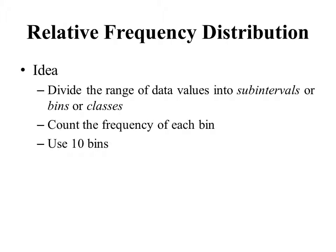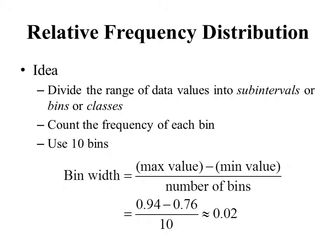For this example we're going to use 10 bins — there's nothing magical about that number, it's just a nice choice. We calculate the bin width by taking the maximum data value, subtracting the minimum data value, and dividing by the number of bins. In this example, the max is 0.94, the min is 0.76, divided by 10, rounded to two decimal places gives a bin width of 0.02.